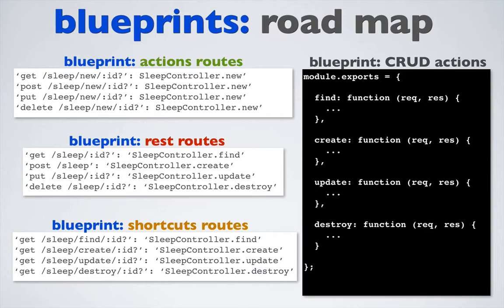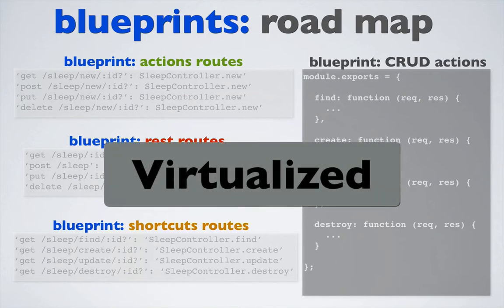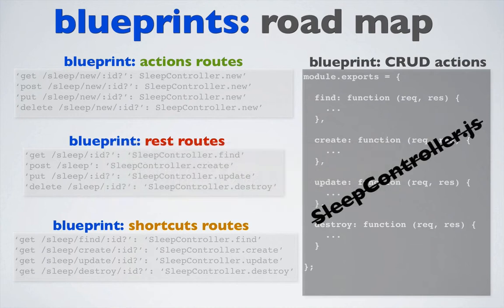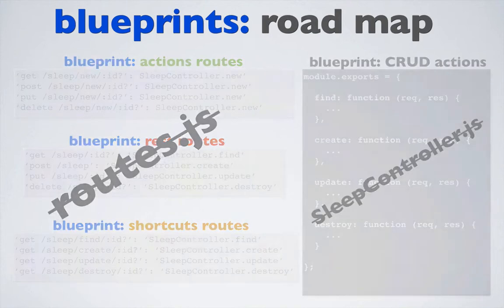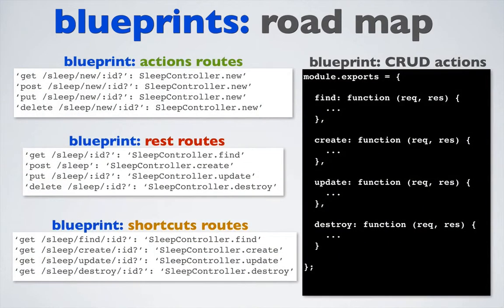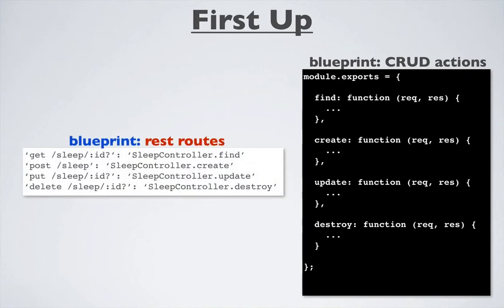I want to make one thing very clear from the beginning. Blueprint actions and blueprint routes are virtualized, in the sense they're not explicitly defined in controller files like sleepcontroller.js or the routes.js file. Instead, they're built up when Sails starts using Sails lift. But as usual, I'm getting ahead of myself. So let's start with seeing what happens when we combine blueprint actions and blueprint REST routes.